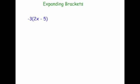And finally, minus 3 bracket 2x minus 5. Well minus 3 times 2 is minus 6, so that gives minus 6x. And you need to be really careful here — we've got minus 3 times minus 5. Well a negative times a negative is a positive, so it's going to be plus 15. So to expand brackets you just multiply what's inside the bracket by the number outside. And that's it.